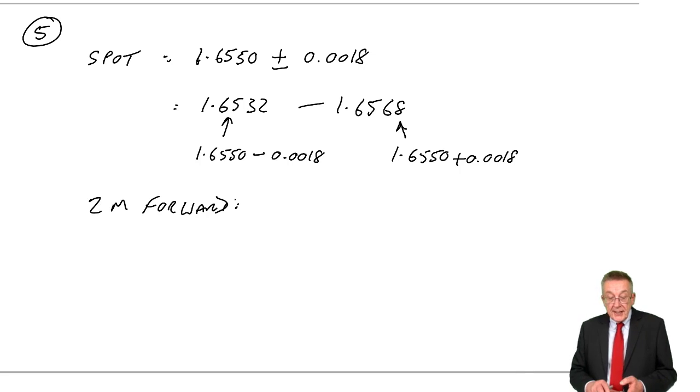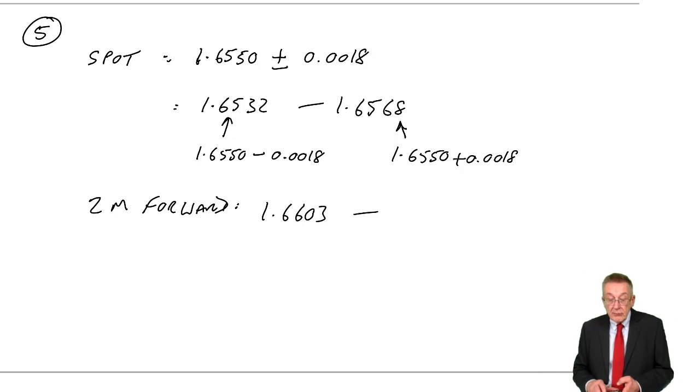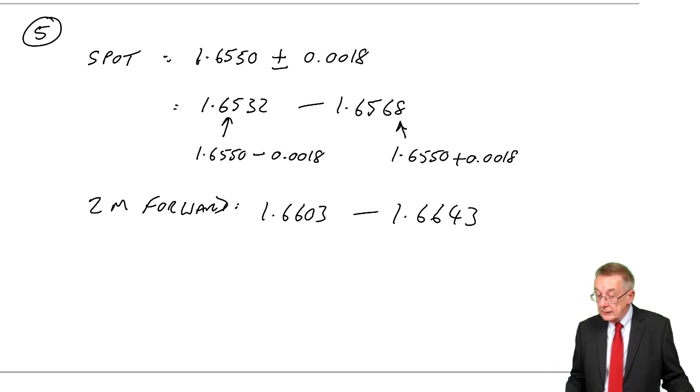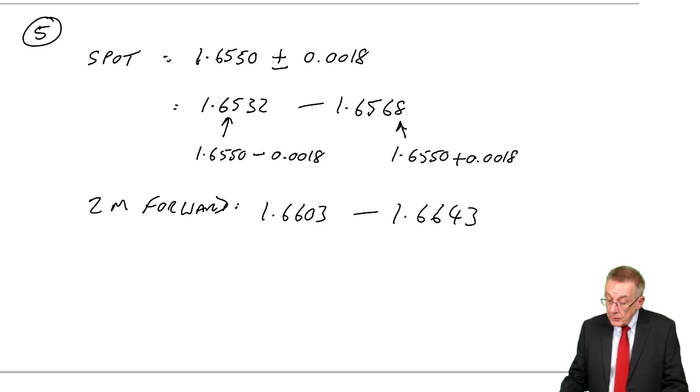The higher rate, 1.6623 plus 0.0020 is 1.6643. So that's the rate they're quoting for converting in two months time. How much are we converting? 200,000. We're paying 200,000.